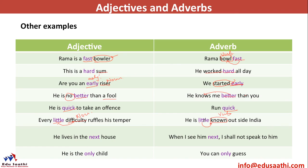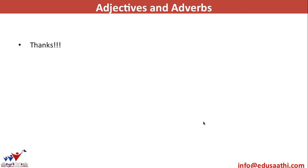Additional examples: 'He's no better than a fool' — 'better' compares him, so it's an adjective. 'He knows me better than you' — 'better' qualifies 'knowing,' so it becomes an adverb. 'Every little difficulty ruffles his temper' — 'little' qualifies 'difficulty' (a noun), so it's an adjective. 'He's little known' — 'little' qualifies 'known' (a verb), so it becomes an adverb. The same word can be used as an adjective or adverb in different sentences. This concludes our discussion of adjectives and adverbs.